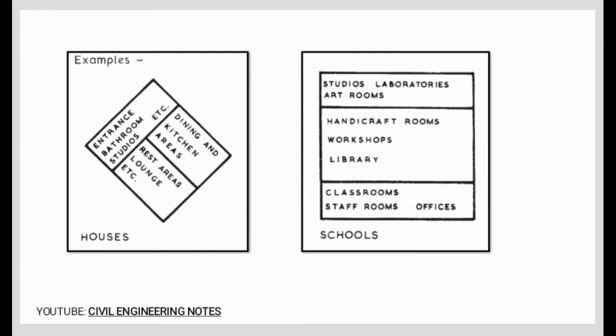On the drawings, we have to consider rooms for the houses, like the entrance, bathroom, studios, dining and kitchen areas, rest areas, lounge, etc. For schools, we have the studios, laboratories, art rooms, handicraft rooms, workshops, library, classrooms, staff rooms, and offices.